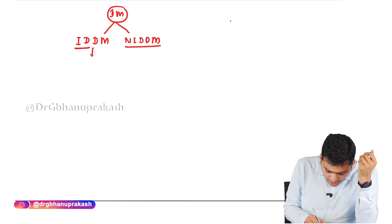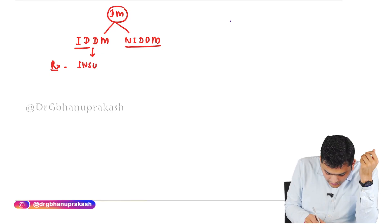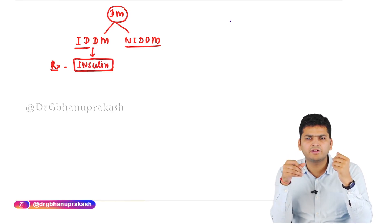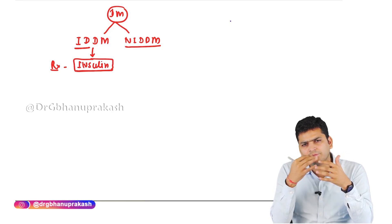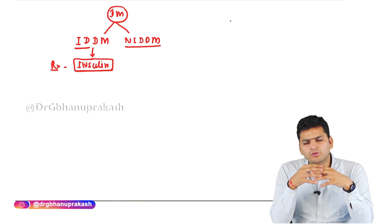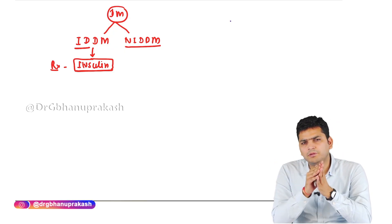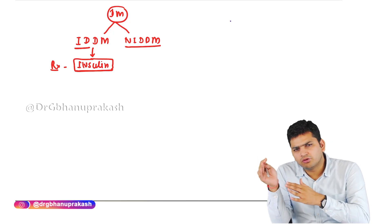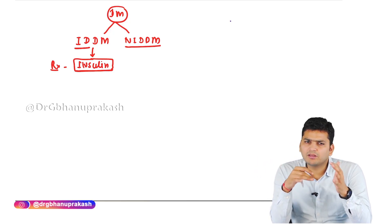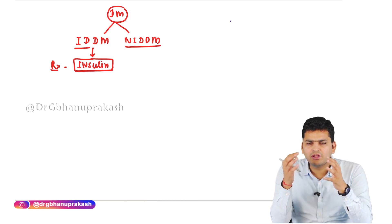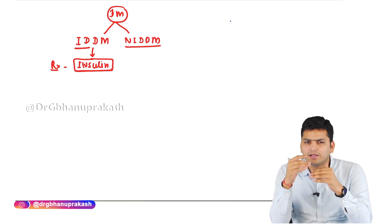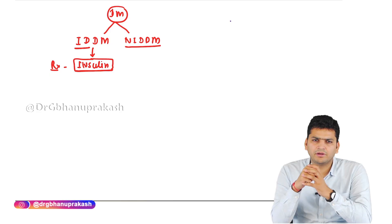IDDM means that for treatment you have to give insulin, because the beta cells are unable to function — there is autoimmune destruction of the beta cells. Beta cells are responsible for insulin secretion, so there will be absolute deficiency. Whereas in non-insulin dependent diabetes mellitus, insulin is present but there is resistance at the insulin receptors.